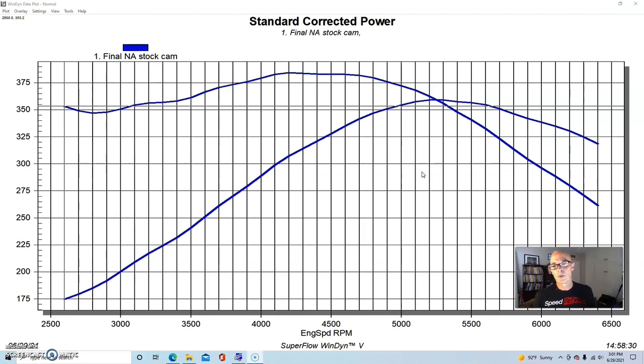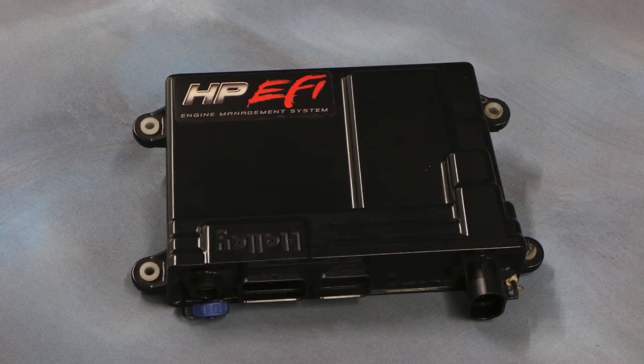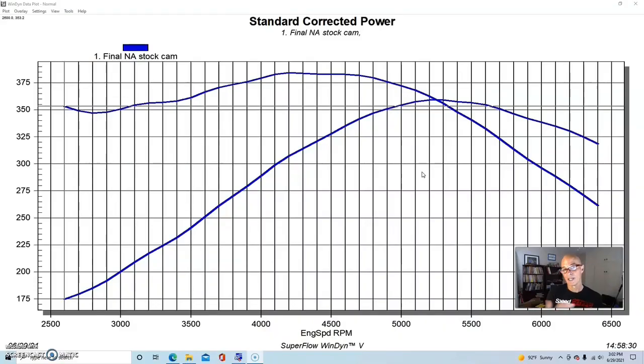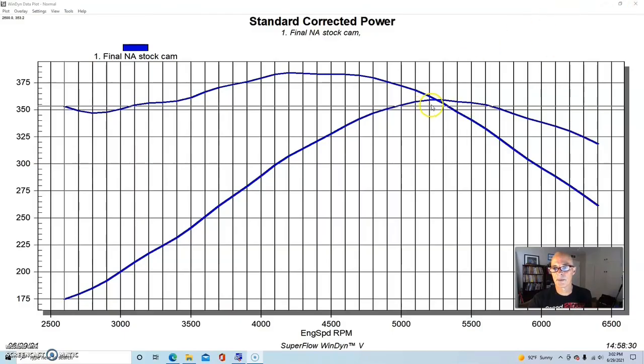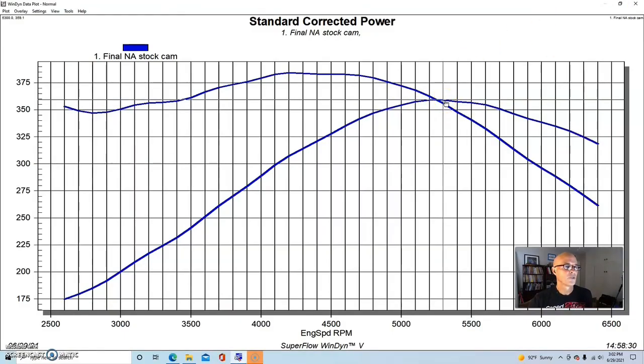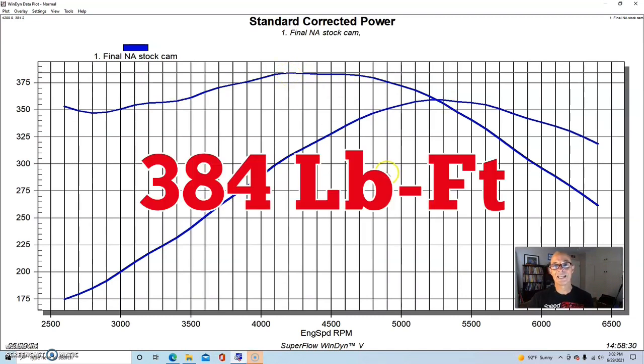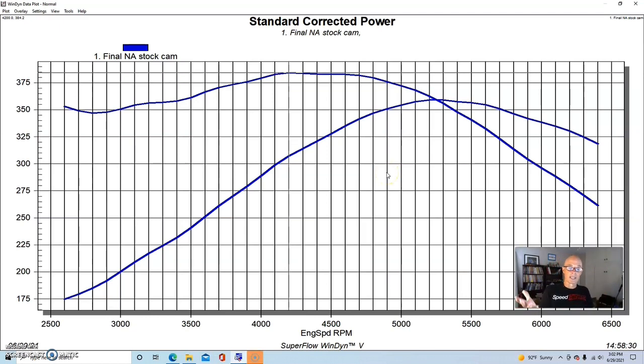We ran a Holley HP management system, we ran the NA combination with long tube headers and 105 millimeter throttle body. So equipped, this combination produced 359 horsepower and 384 foot-pounds of torque. This was also run on 91 octane, just regular pump gas, the way that we do it with just the open headers, Meziere electric water pump, no accessories, yada yada yada.